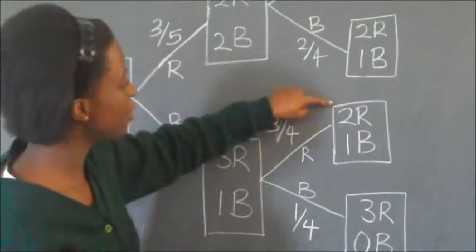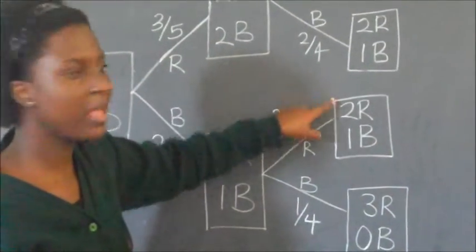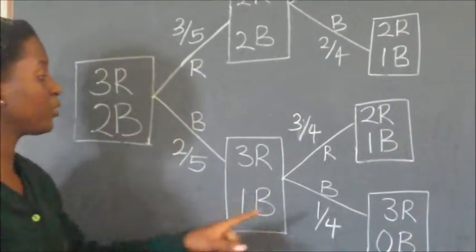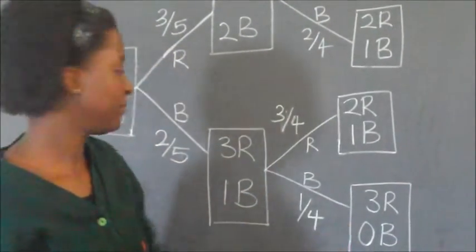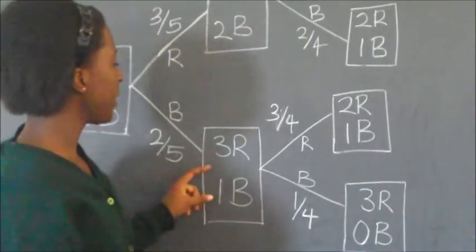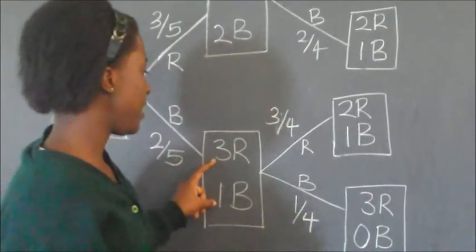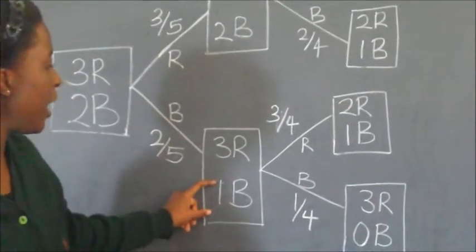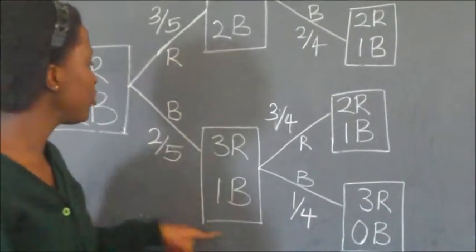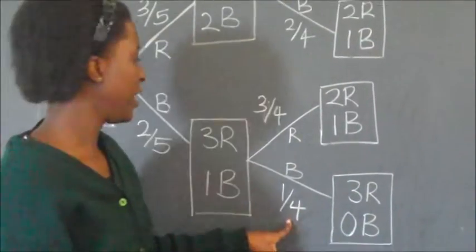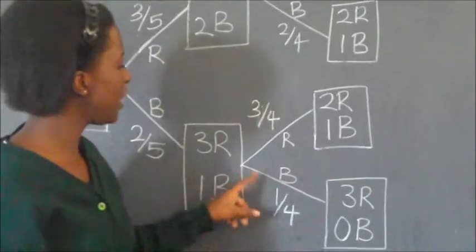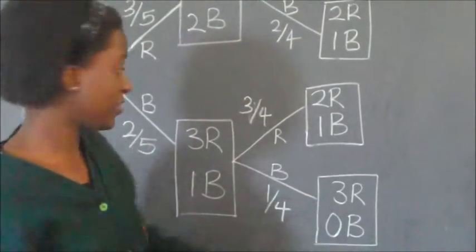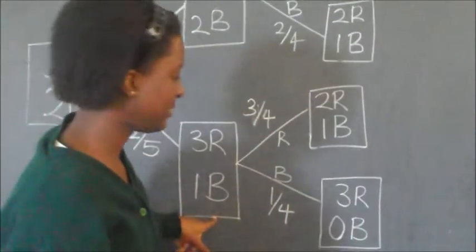So now we are remaining with two red sleepers and one blue sleeper. But again on the second picking, we could instead pick a blue sleeper. If we pick a blue sleeper from here, the probability is one out of four, because it's one blue sleeper over the total number, which is four. When we pick that blue sleeper, we remain with three red and zero blue, since there was only one blue and we have picked it.